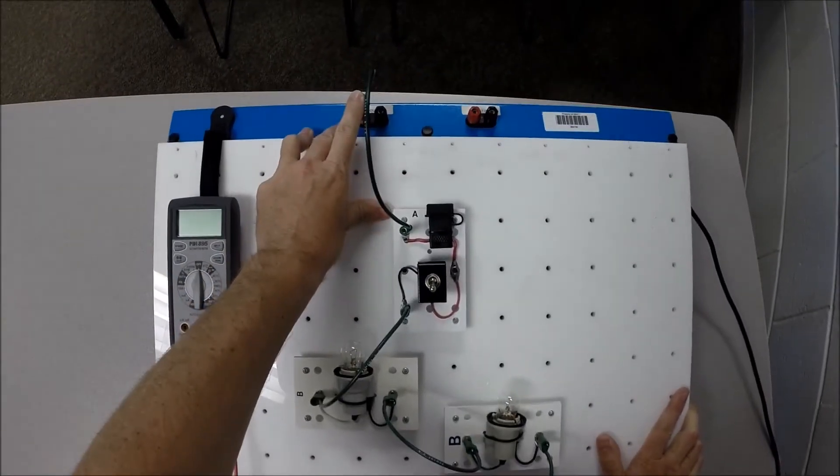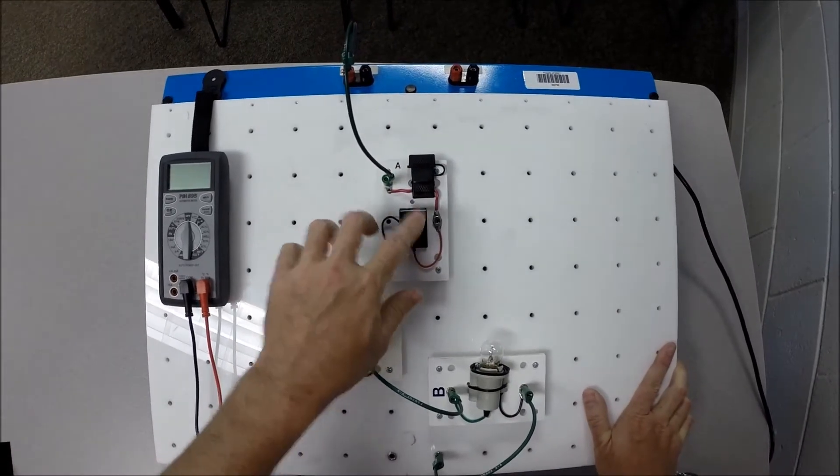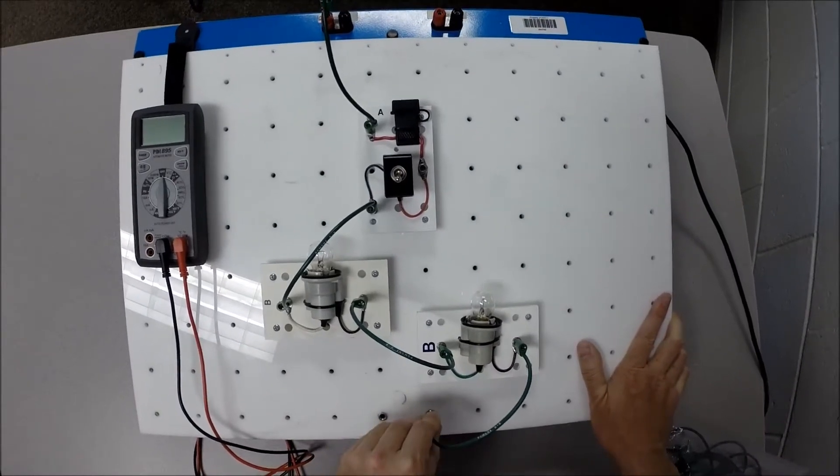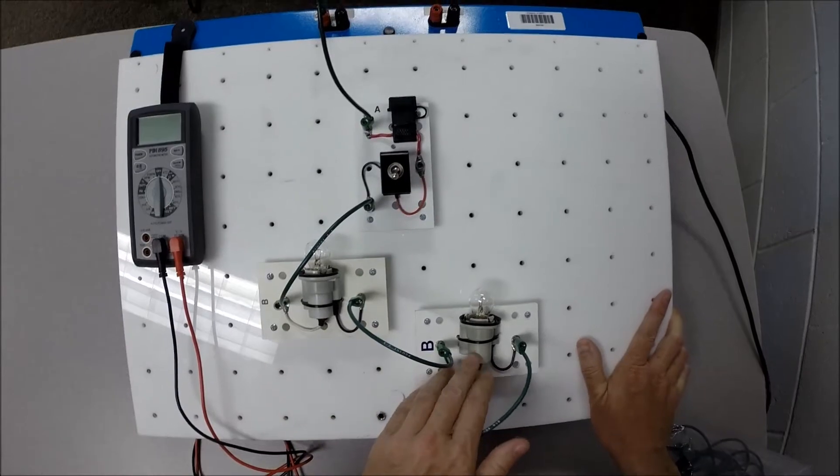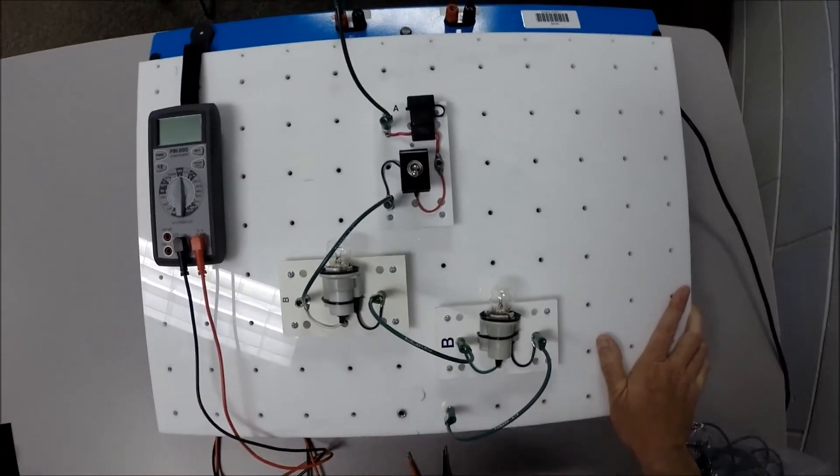Starting out with 12 volts up here, we have power flowing through our fuse, through our switch, and then we're flowing through this bulb, then through that bulb, down here to ground. So, series circuit, the two loads in the circuit are hooked together in series, meaning one right after the other.